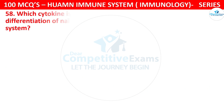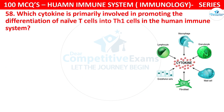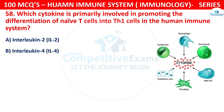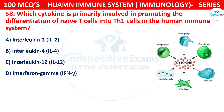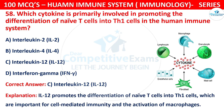Question number 58. Which cytokine is primarily involved in promoting the differentiation of naive T cells into TH1 cells in the human immune system? The options are interleukin-2, interleukin-4, interleukin-12, or interferon-gamma. The correct answer is C, that is interleukin-12. IL-12 promotes the differentiation of naive T cells into TH1 cells, which are important for cell-mediated immunity and the activation of macrophages.